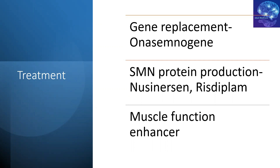The second approach is enhancing SMN protein production, since with SMN1 deletion we are left with SMN2, which produces mostly dysfunctional truncated protein. Two treatments enhance functional protein production: Nusinersen, introduced in December 2016, is given as intrathecal injections — four loading doses then every four months. It requires expertise and carries risk of low-pressure headache. The cost is $750,000 per year for the first year and $375,000 annually thereafter.